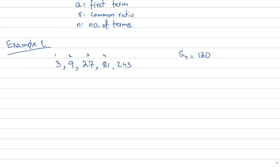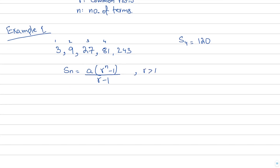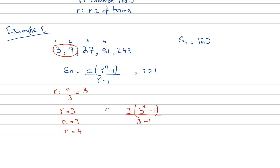Now let's apply the formula: a times (r^n minus 1) over (r minus 1). We use this formula because our common ratio is greater than 1. To find the common ratio, divide two consecutive terms: 9 divided by 3 equals 3, so r equals 3. The first term a is also 3, and the number of terms n equals 4. Plugging into the formula: 3 times (3 raised to the power 4 minus 1) over (3 minus 1).